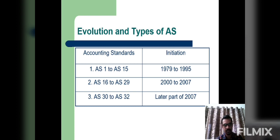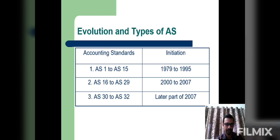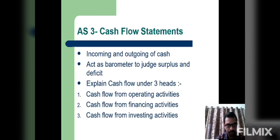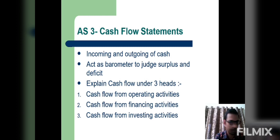In this way, this is the evolution of Accounting Standards in India. We have also discussed the types of Accounting Standards as per the syllabus. The first Accounting Standard we have to study is Accounting Standard Number 3, which stands for the Cash Flow Statement.